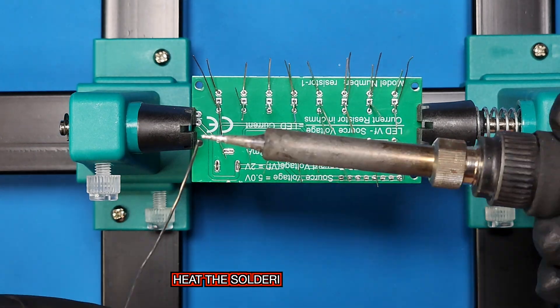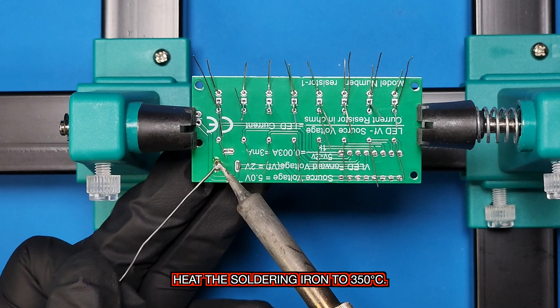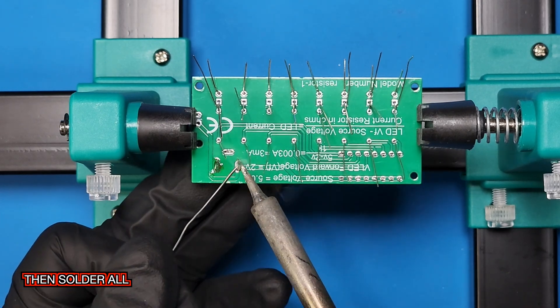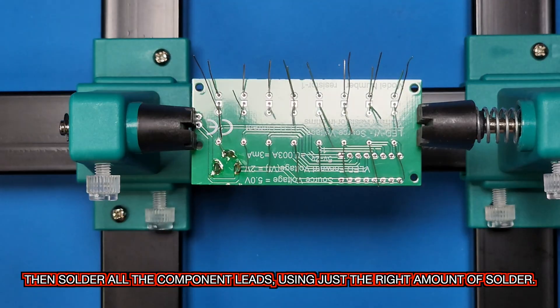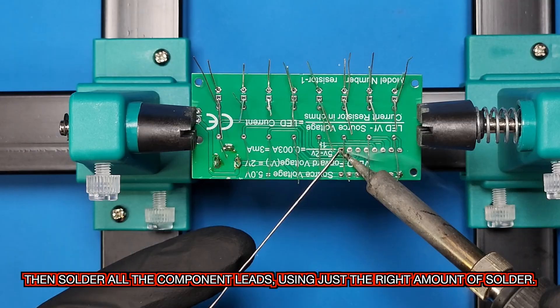Heat the soldering iron to 350 degrees Celsius. Then, solder all the component leads using just the right amount of solder.